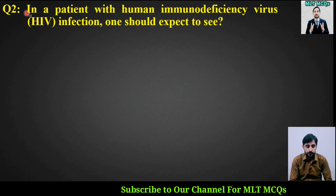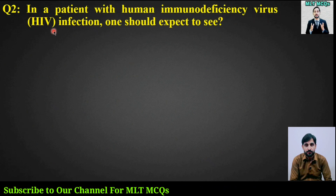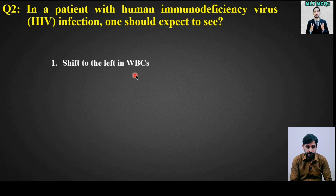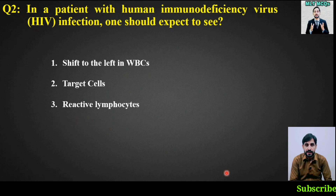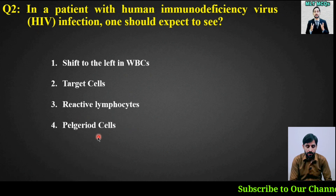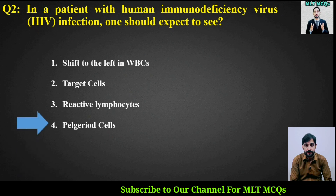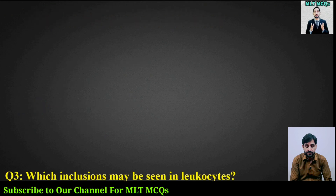MCQ number 2: In a patient with human immunodeficiency virus (HIV) infection, one should expect to see — options are: shift to the left in WBCs, target cells, reactive lymphocytes, or Pelger-Huët cells. The right answer is option number 3, reactive lymphocytes.